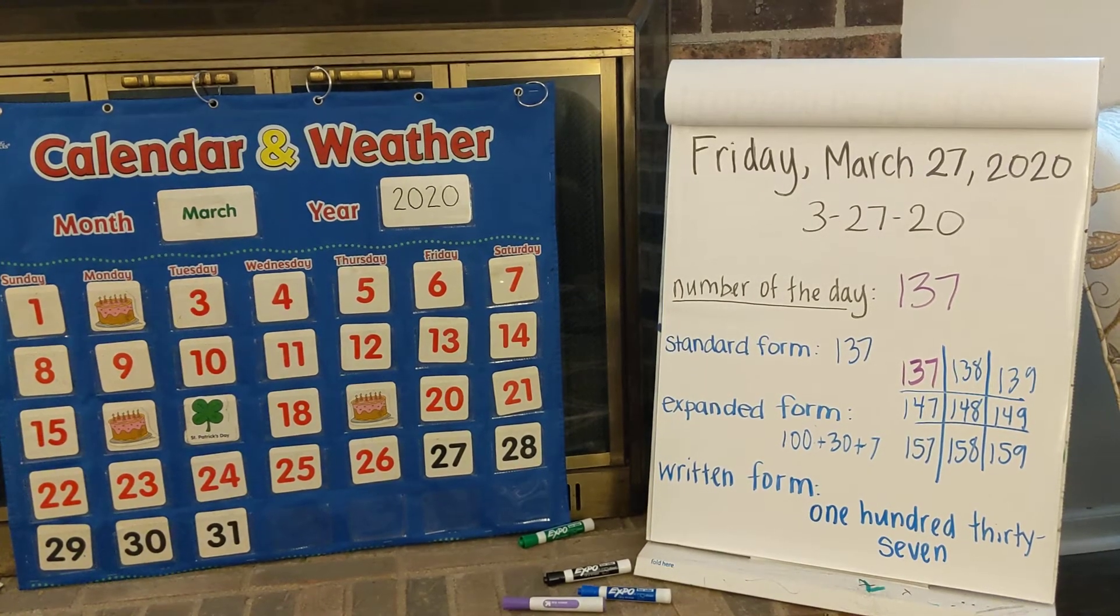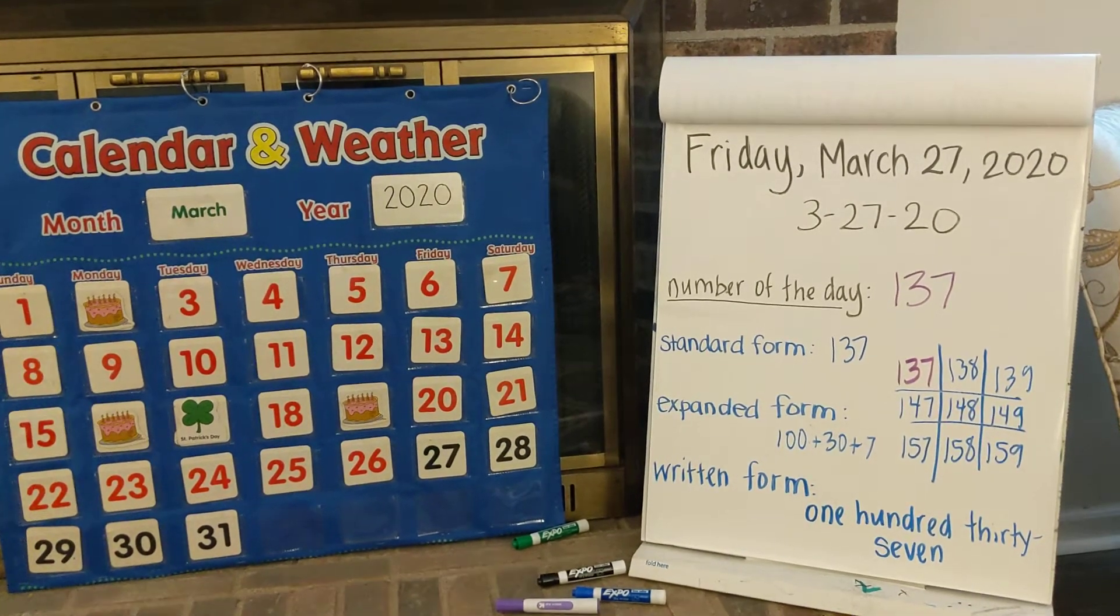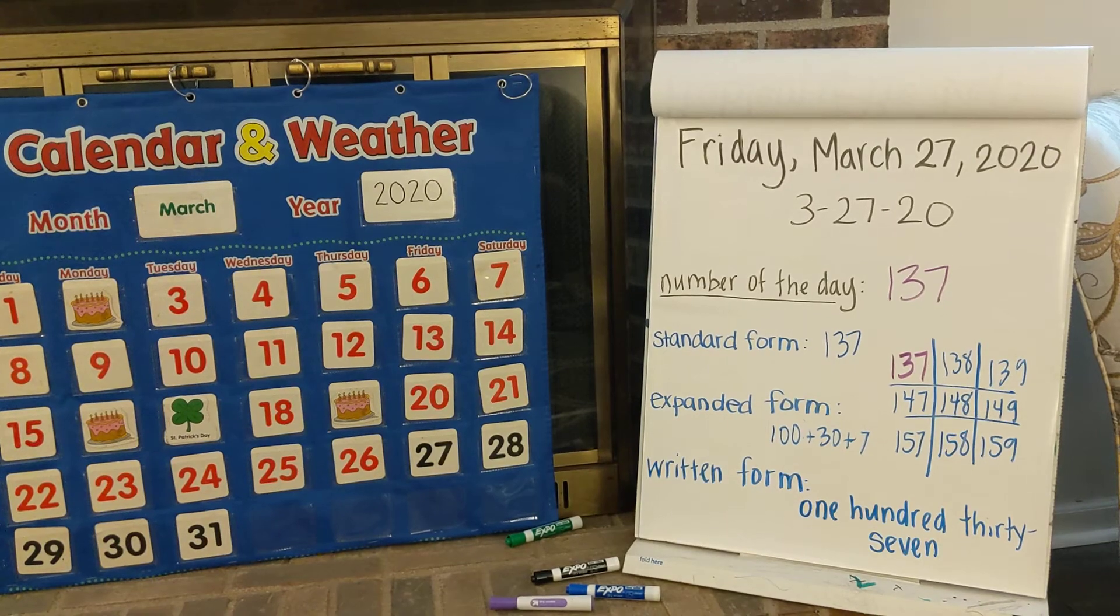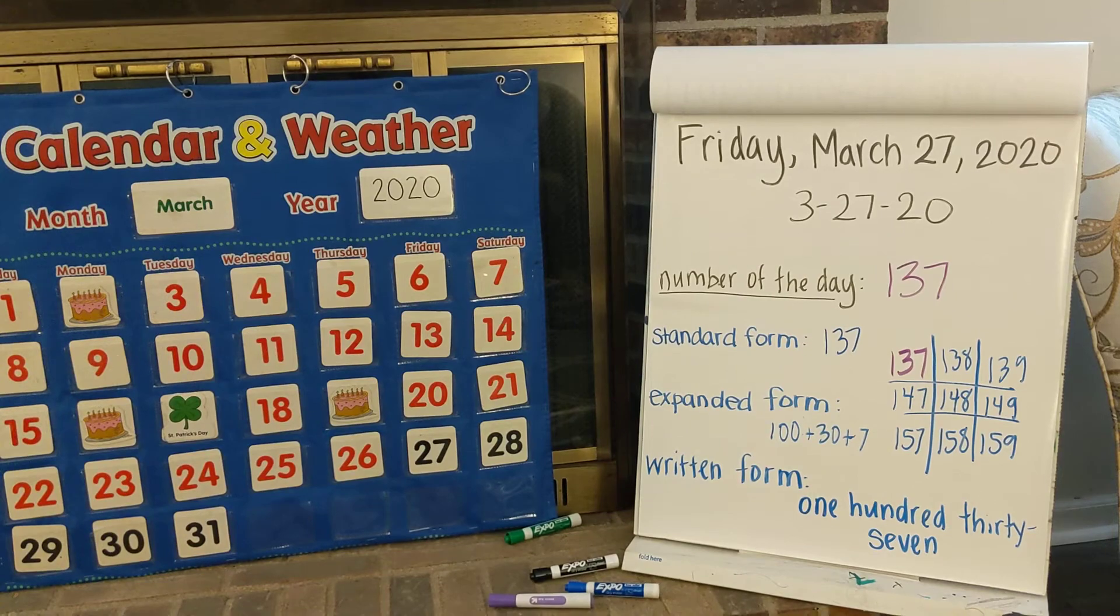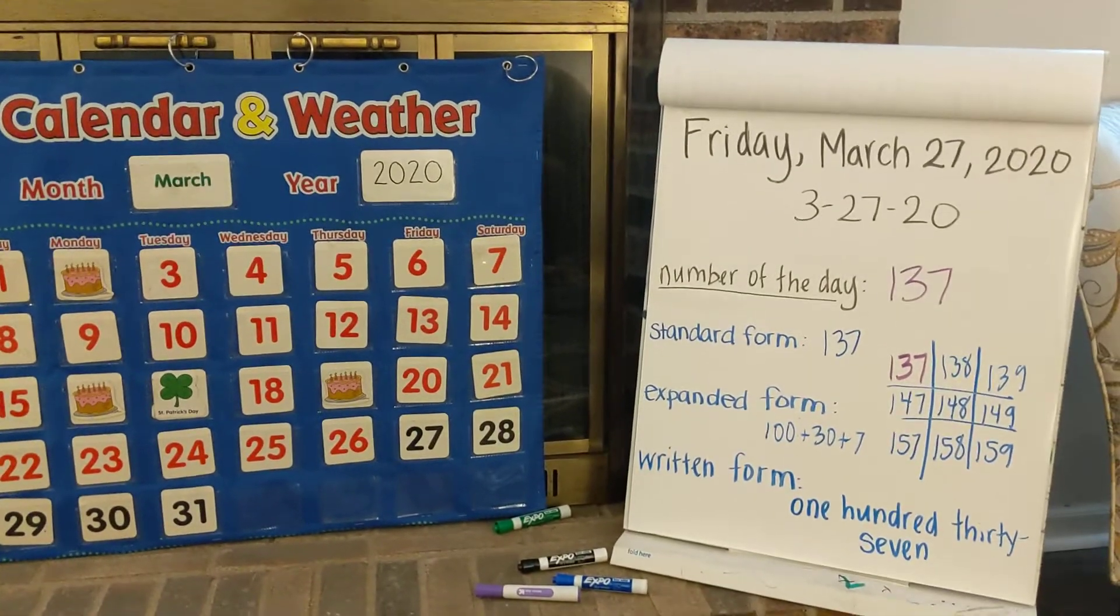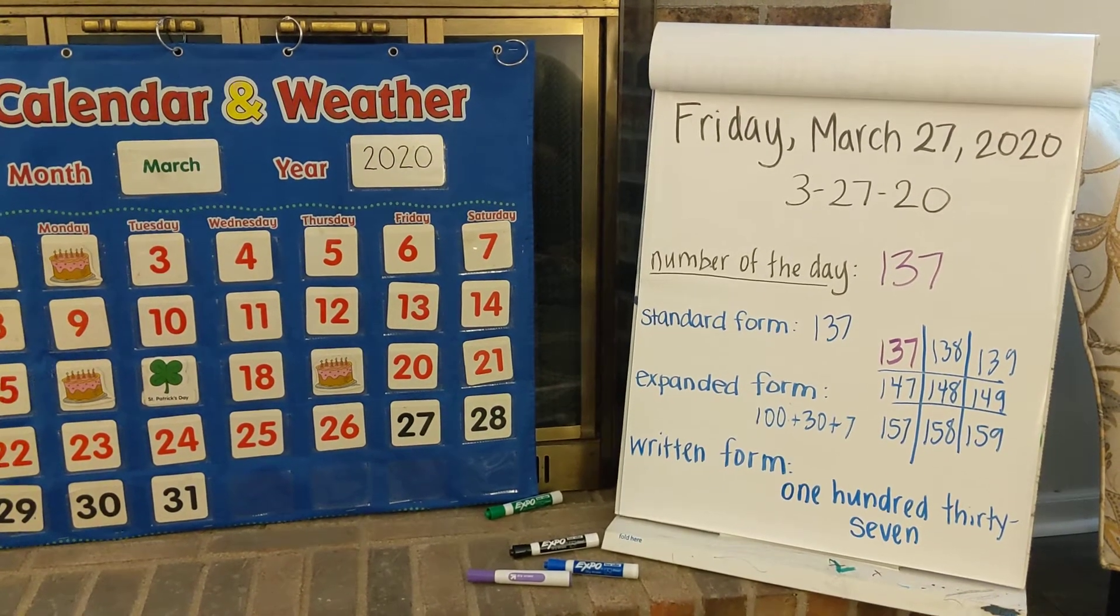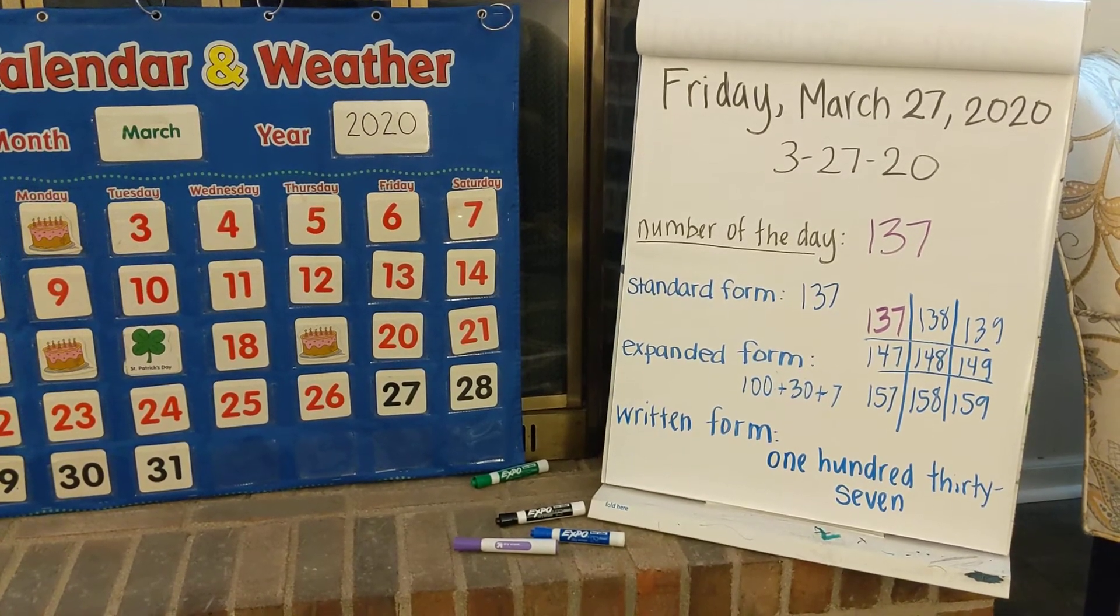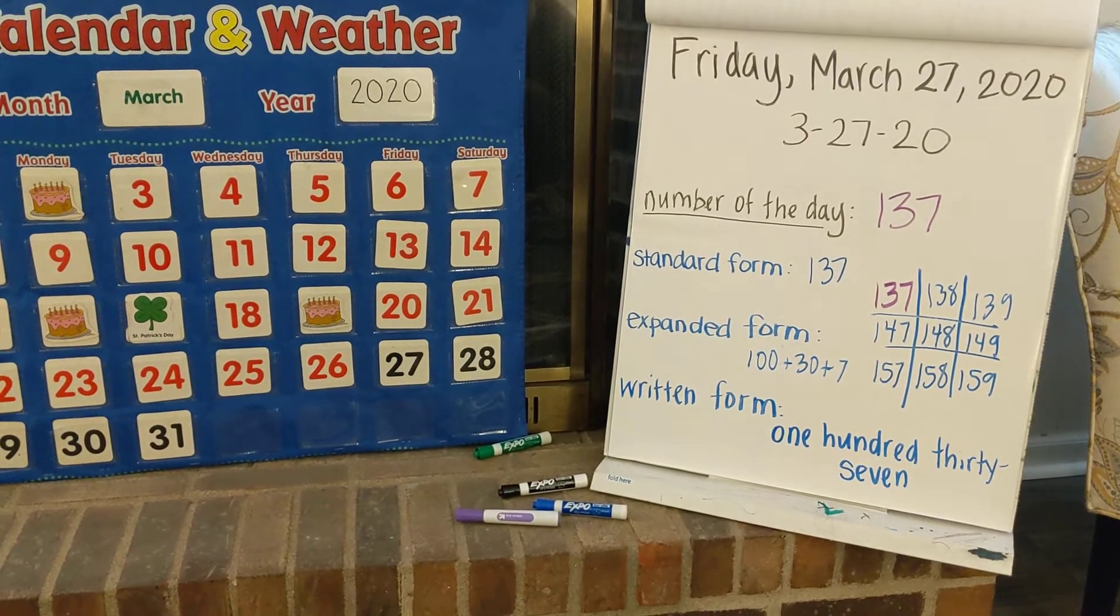So you should have the standard form as one, three, seven, just writing the number. The expanded form, we have a one in the hundreds place, and that stands for 100. We have a three in the tens place, and that stands for 30. Then we have a seven in the ones place, and that stands for seven. We spell it O-N-E-H-U-N-D-R-E-D-T-H-I-R-T-Y-Dash-S-E-V-E-N.